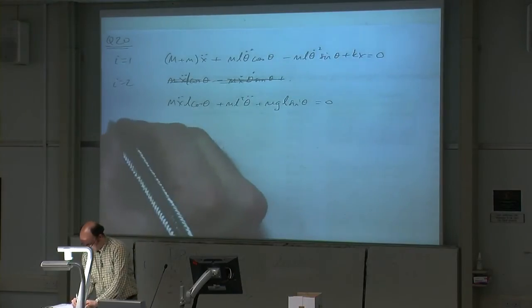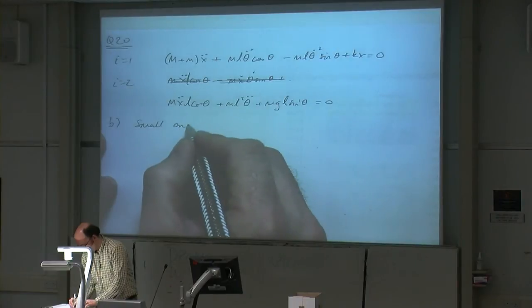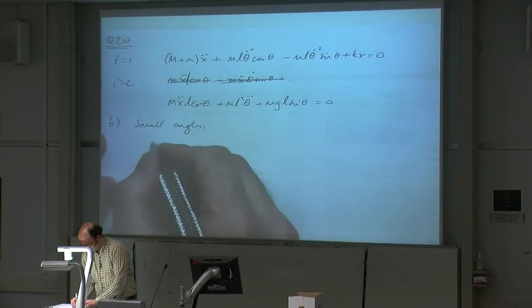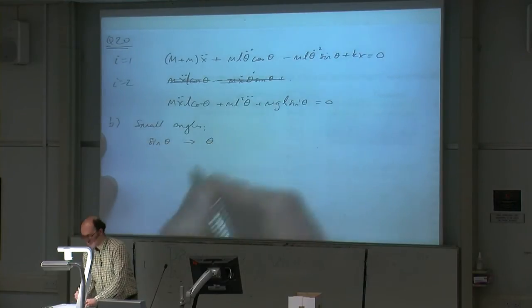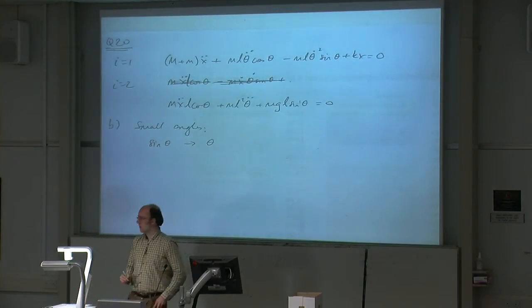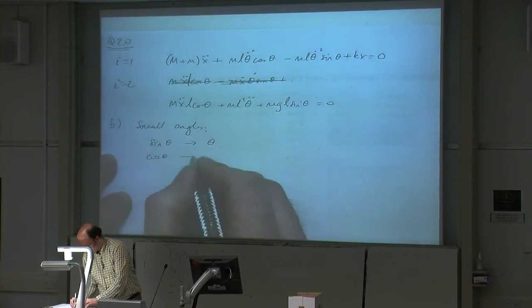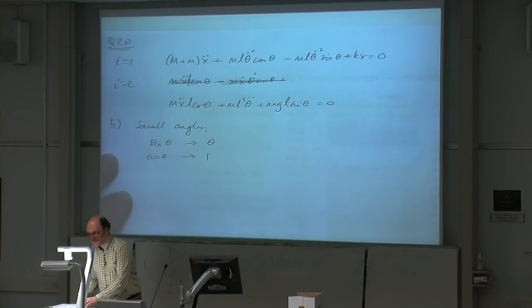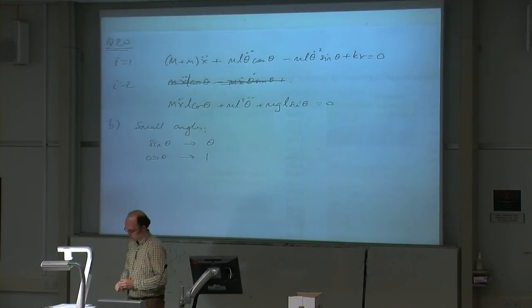For small angles, you can make some assumptions. Small angles means that if you've got sin(θ), that reduces to θ, because they're virtually the same thing. And cos(θ) reduces to 1, because for small angles, cosine of that angle will be very close to 1.